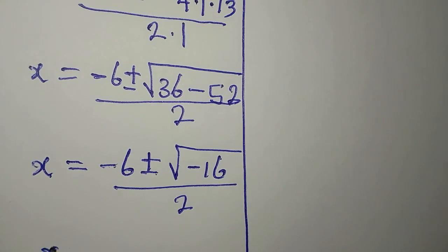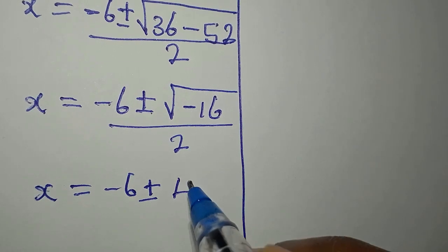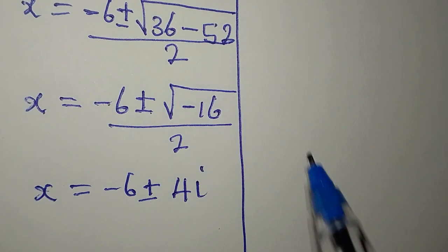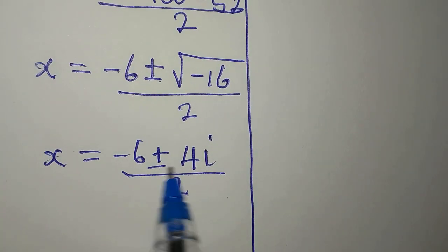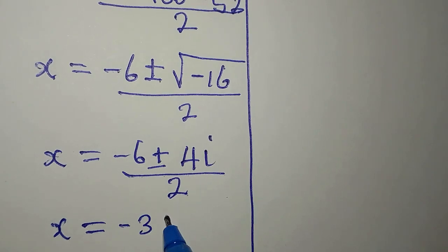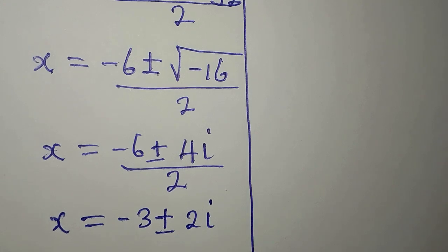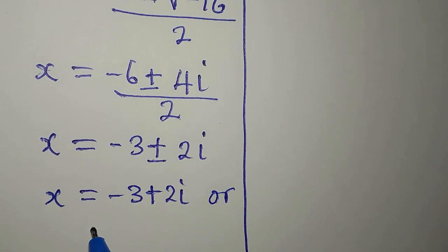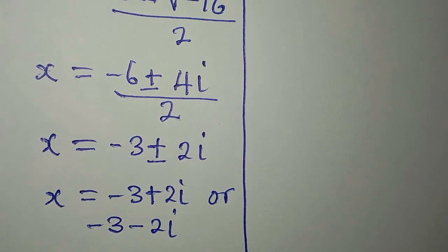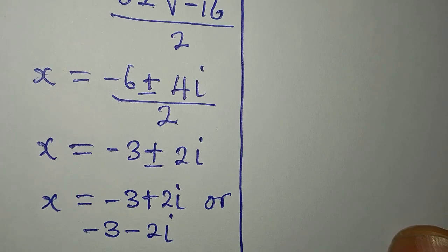Now our x is equal to minus 6 plus or minus — the square root of negative 16 gives us 4i, because the negative here gives us a complex solution. We divide by 2; 2 can go into both numerators, so our x will be minus 3 plus or minus 2i, meaning that x is equal to minus 3 plus 2i, or minus 3 minus 2i. Those are the two values of x from the first quadratic expression.